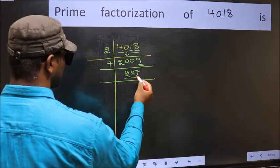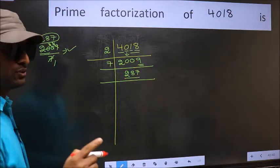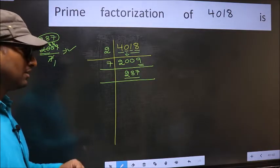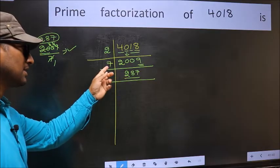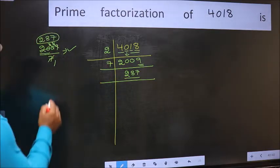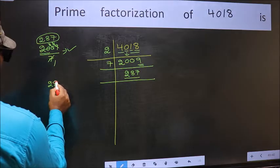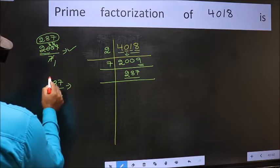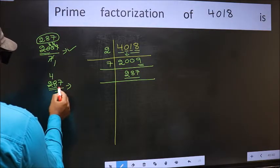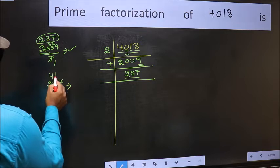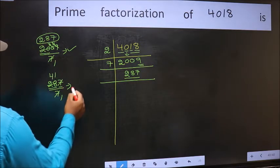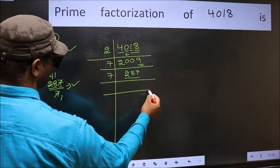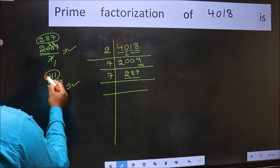Now, for this number, we don't need to check divisibility by 2, 3 or 5, as we already checked before. We start from 7 onwards. Let us check 287 by 7. 7 fours 28. The other number 7. 7 once 7. No number left out, so divisible by 7. So, 7 here, and we write 41.